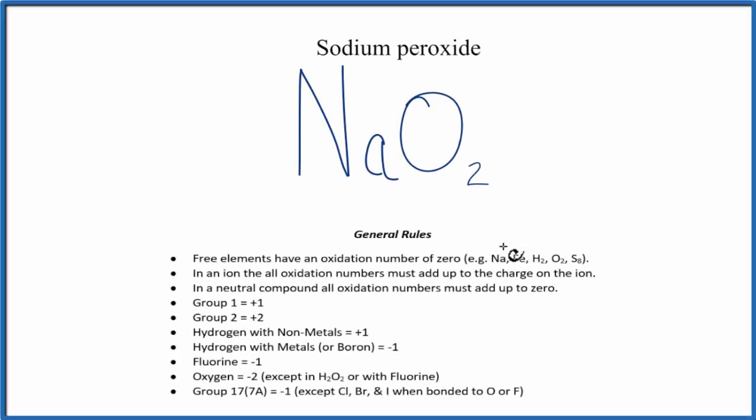In this video, we'll find the oxidation number for NaO2, sodium peroxide. This one's a little bit different because this is what's called a superoxide, and we'll see why in a minute.